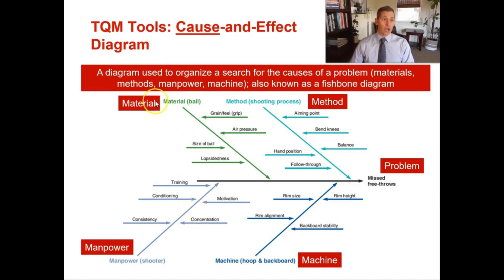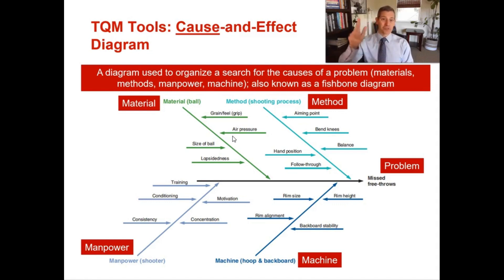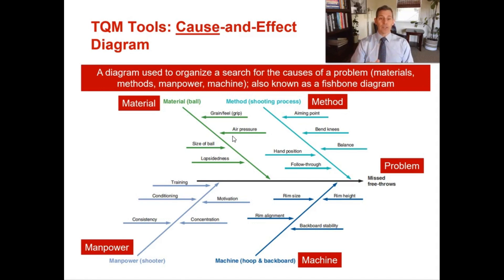This tool helps us to generate ideas. We go through each category to see what the cause could be and identify the cause-and-effect relationship. For method: is it my aiming point, not bending my knees, my hand position, or my follow-through? For machines: maybe the backboard is out of alignment, the rim is the wrong height or wrong size.